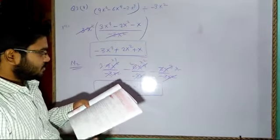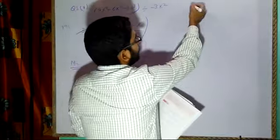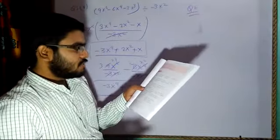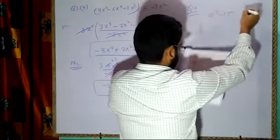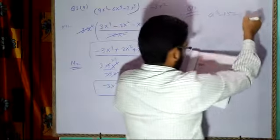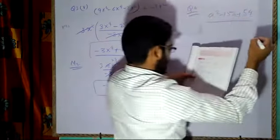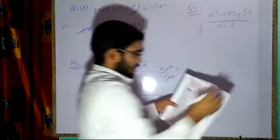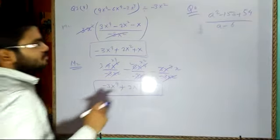Now for binomial or trinomial divided by binomial, question number 4 says: divide a² minus 15a plus 54 by a minus 6. If you try to separate terms as before, you will not be able to achieve the target. So you have to use the long division method — the old method you used to solve problems like 6 divided by 2.